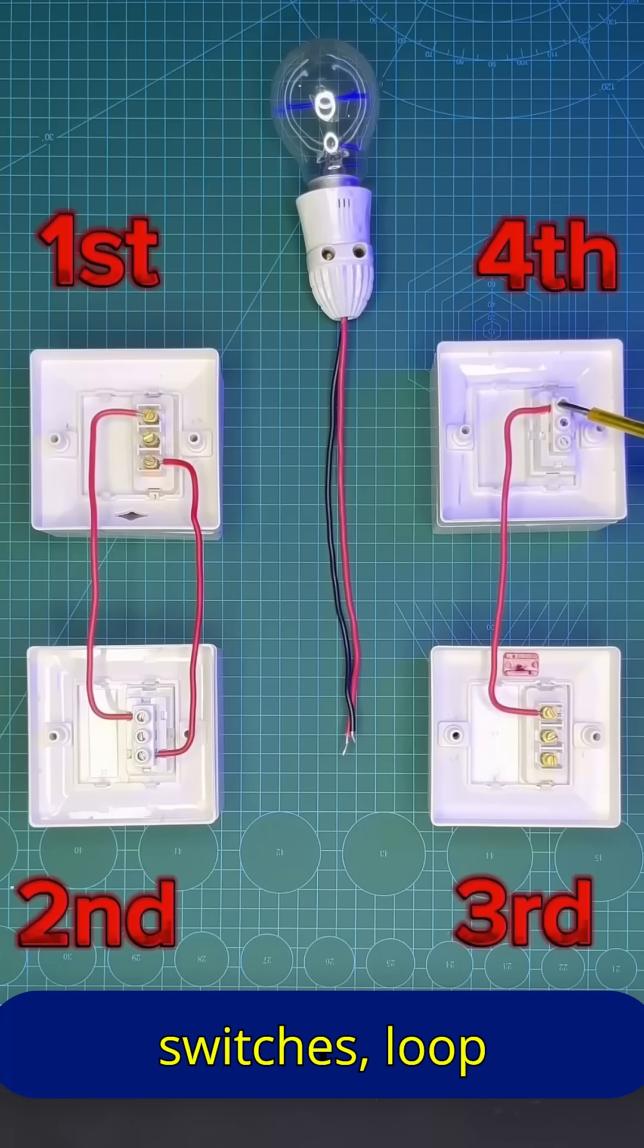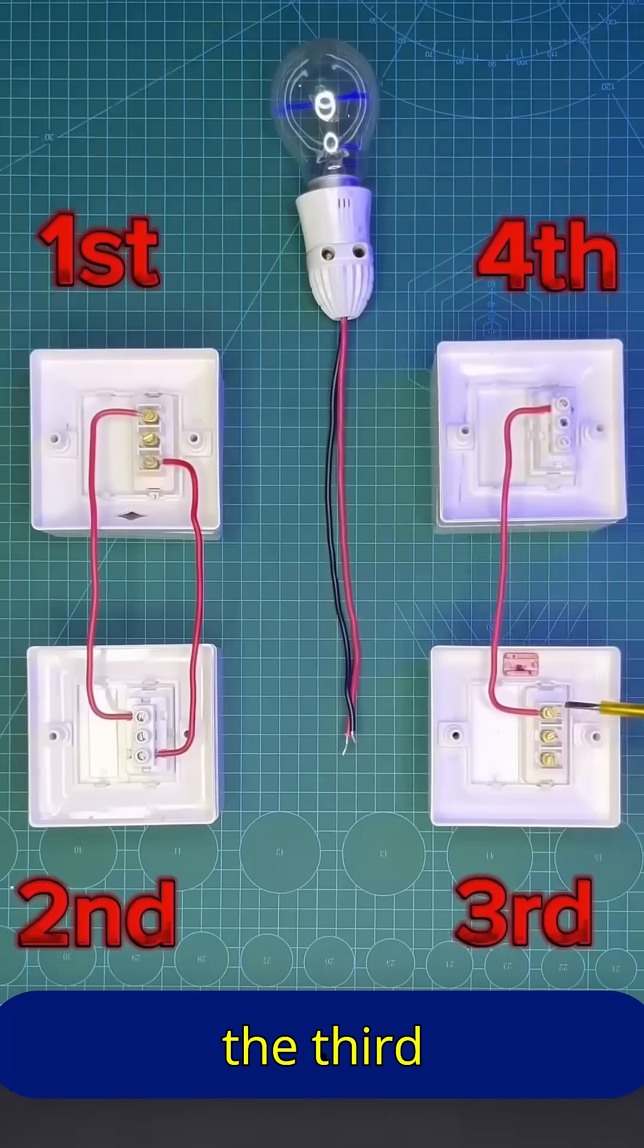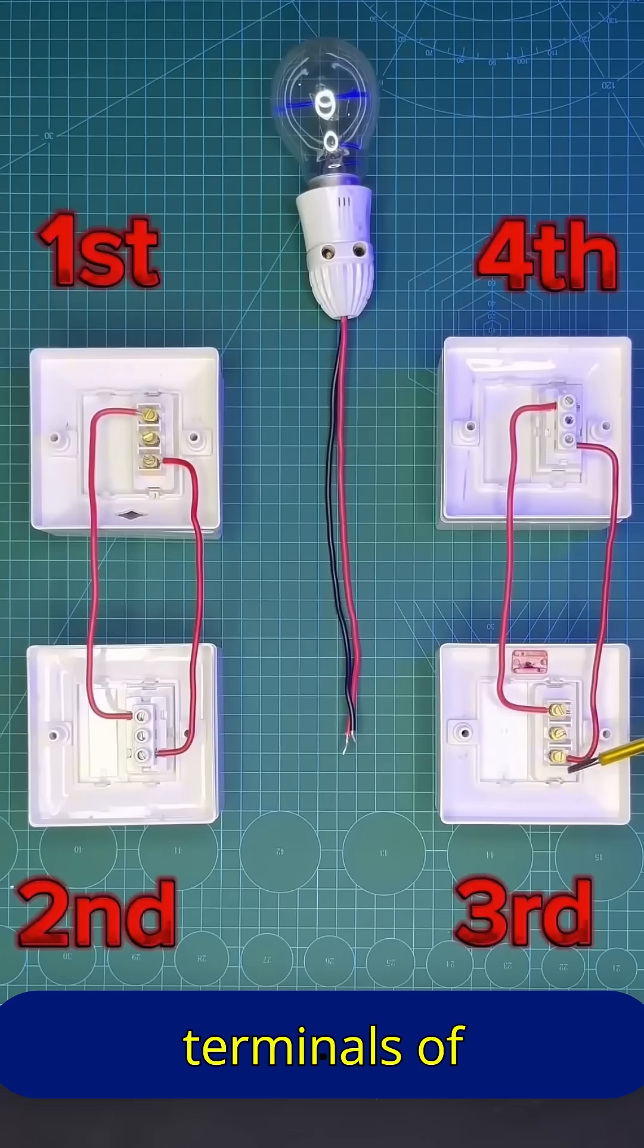Now, to connect the third and fourth switches, loop the upper terminal of the fourth switch to the upper terminal of the third switch. After that, connect the lower terminals of these two switches as well.